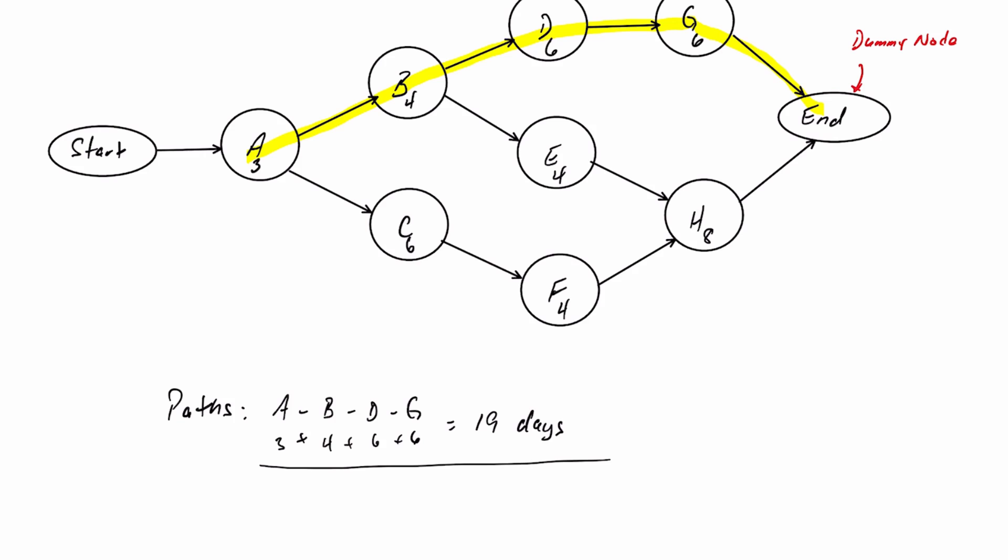We have another path that's A, B, E, H, end. A, B, E, H. And if we add all those days up together, 3, 4, 4, and 8, that will equal also 19 days.